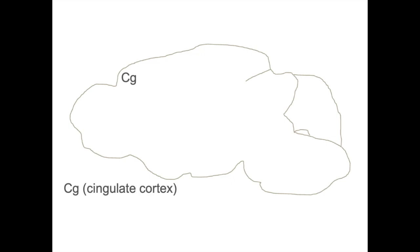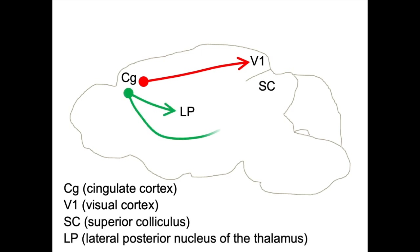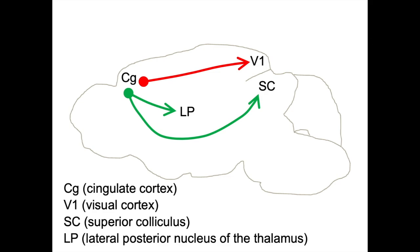The prefrontal cortex plays an important role in top-down modulation. In the mouse, cingulate cortex modulates visual processing. In addition to direct corticocortical projections to visual cortex, which have been studied extensively, there are also corticotectal neurons projecting to the superior colliculus and lateral posterior nucleus. We know that corticotectal neurons and corticocortical neurons are separate populations. In this study, we tested how corticotectal neurons affect top-down modulation.